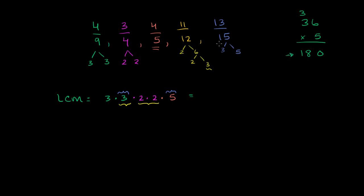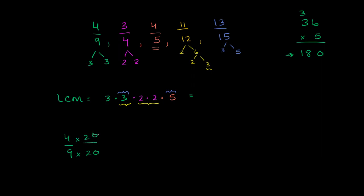We want to rewrite all of these fractions with 180 in the denominator. The first fraction, 4/9 — what is that over 180? To go from 9 to 180, we multiply the denominator by 20. Since we don't want to change the value of the fraction, we also multiply the 4 by 20 — we're multiplying by 20 over 20. So 4/9 is the same thing as 80 over 180.